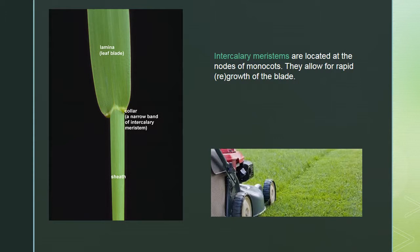The intercalary meristem is also responsible for primary growth and is located on the nodes of monocot plants — these are quick growers. That's why when we mow grass, they say only cut the top third: if you cut down to the intercalary meristem located at the base near the collar, the grass cannot regrow.